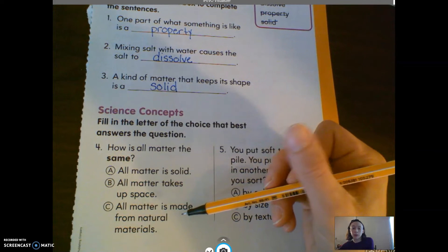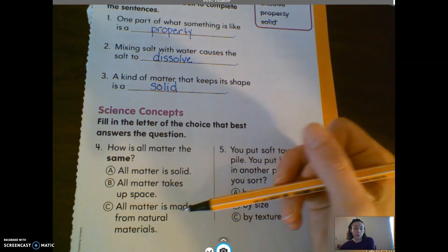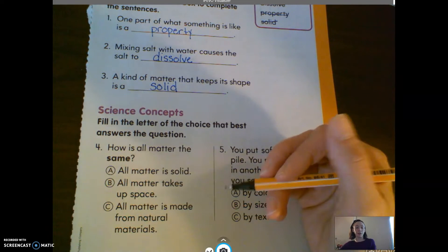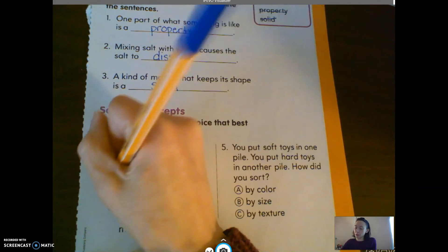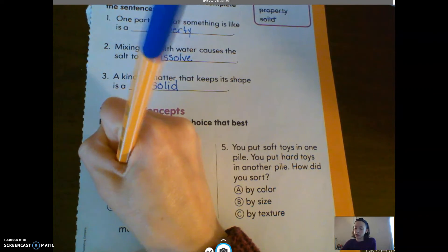And not all matter is made from natural materials. There are some things that are not made from natural materials that are still matter. So it has to be B. All matter takes up space.